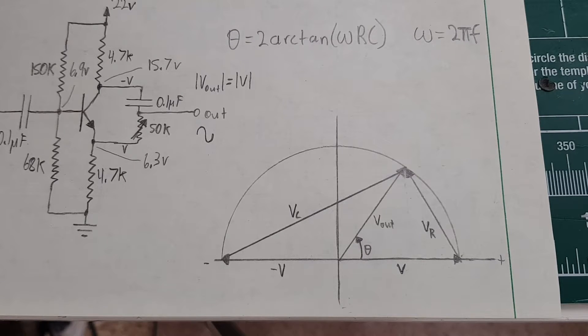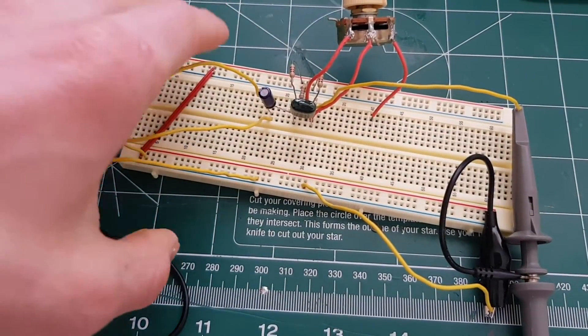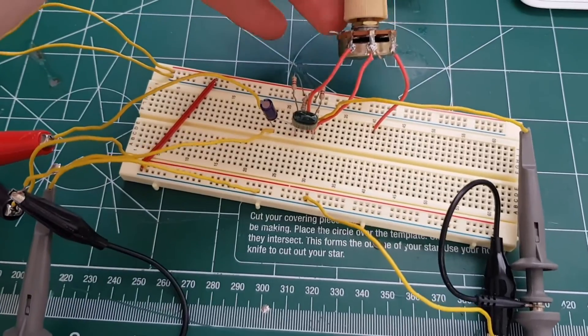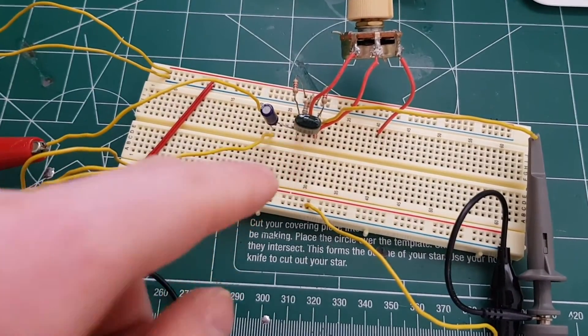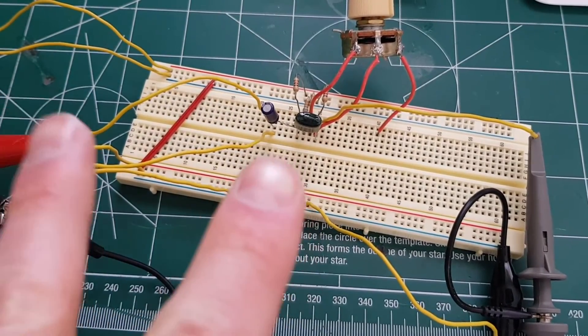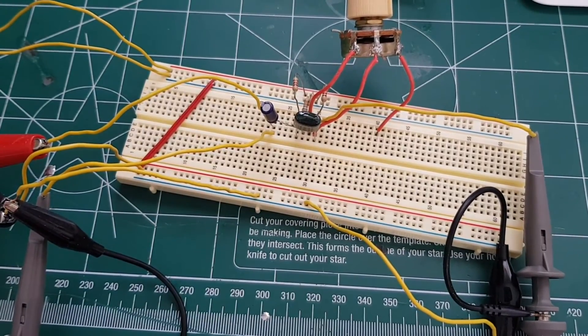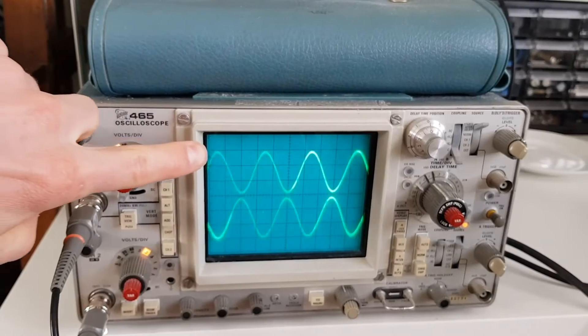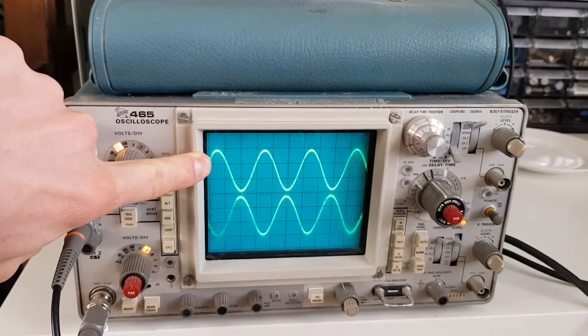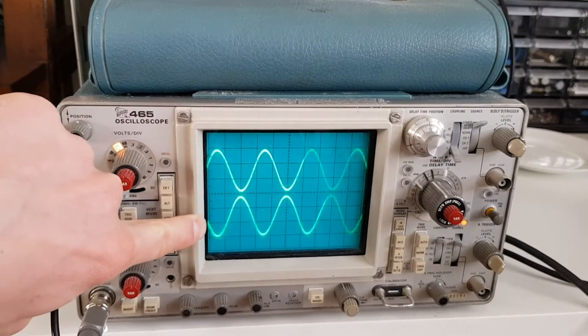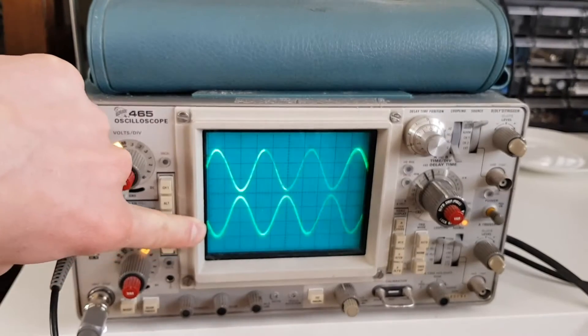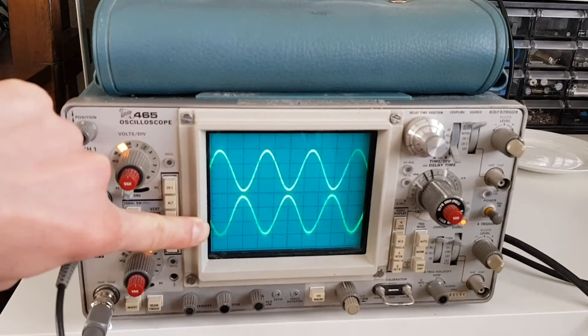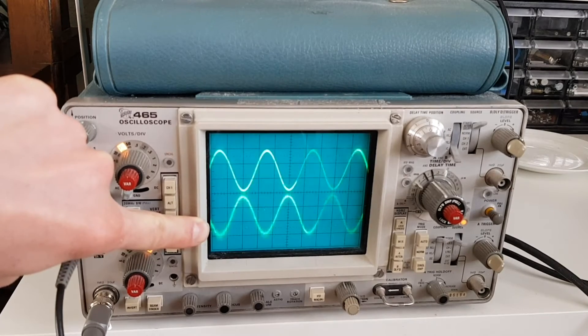So here's the circuit built up on the breadboard. We have a 50k potentiometer, 0.1 microfarad capacitor combining the two outputs together. And on the scope we have two signals: we got the incoming signal which is at the beginning of the circuit, and then we have the output of the circuit which is now phase shifted 180 degrees, almost. And as I rotate this pot...